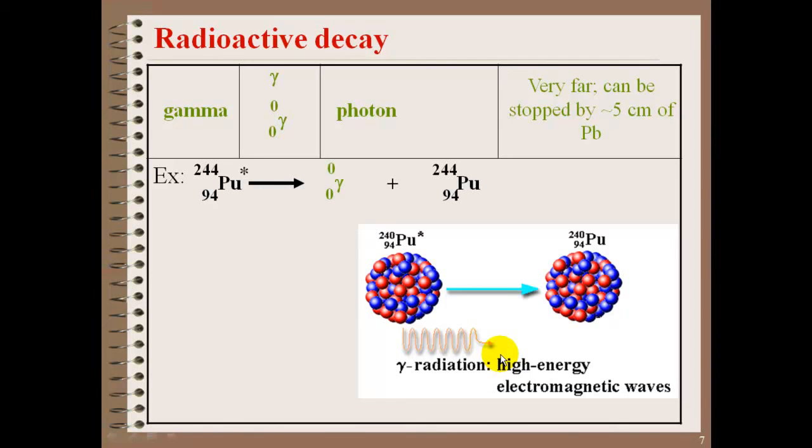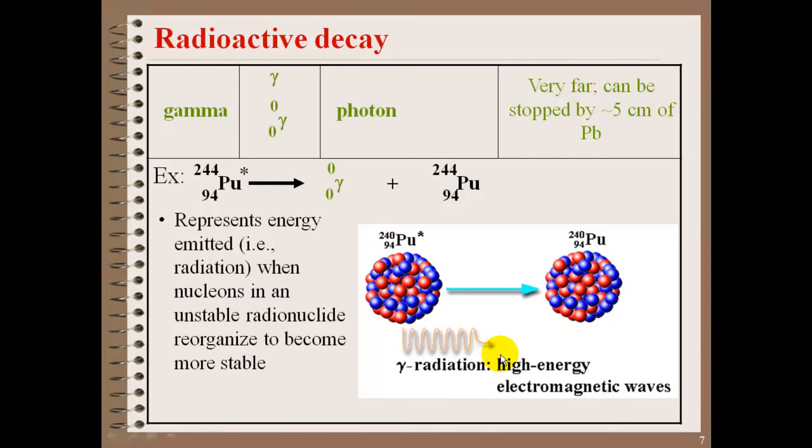Here we have plutonium-244, which goes through a gamma decay. You'll notice there's no change in the mass, nor is there a change in the number of protons. What ends up happening is the energy that's emitted occurs when the neutrons and protons in the nucleus are unstable, and they have to reorganize and shift themselves to become stable. Some energy has to be given off from that nucleus in form of a gamma decay, and the nucleus now becomes more stable. It's usually not written in a nuclear reaction. You'll usually see it accompany other reactions, like an alpha decay.